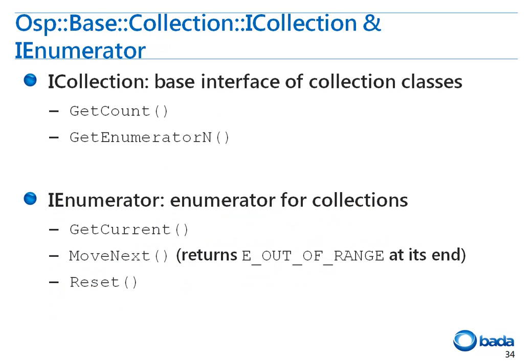The most important interfaces in the collection are iCollection and iEnumerator. iCollection provides the getCount and getEnumeratorN functions. The getCount function returns the number of items in the collection, and the getEnumeratorN function returns the enumerator interface. iEnumerator is the enumerator of the collection and is used to get items in sequence. It provides getCurrent, moveNext, and reset functions.